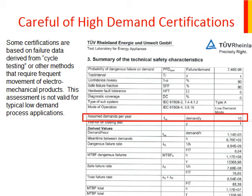There's a question: right above the red line, it says 'low demand mode.' I can only assume the analyst didn't really understand the definition of low demand, because 10 demands per year violates the definition of low demand in IEC 61508 and 61511. So those two lines do contradict each other, and I have no explanation for that.